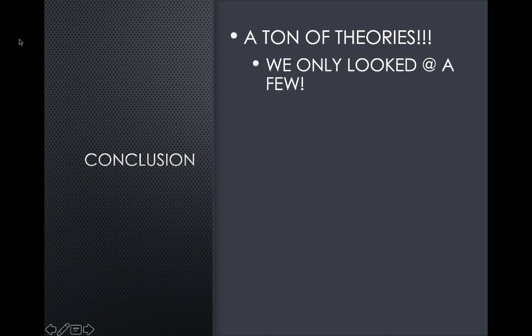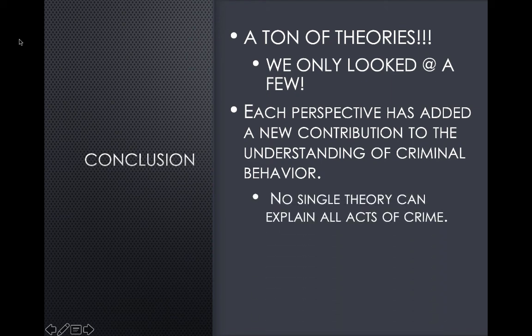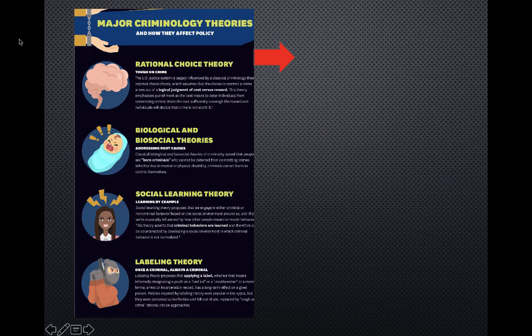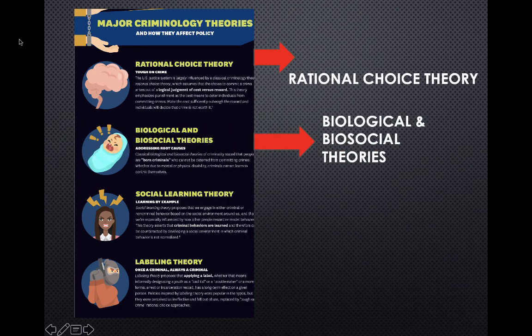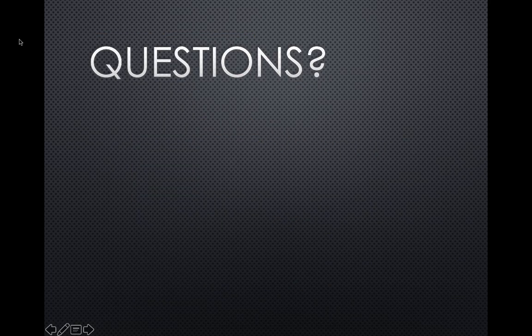In conclusion, we have a ton of theories and we only looked at a few of them. Each perspective has added a new contribution to the understanding of criminal behavior. No single theory can explain all acts of crime, and each theory has strengths and weaknesses. Some of the major criminological theories include rational choice theory, biological and biosocial theory, social learning theory, and labeling theory. We will see you for the next series.